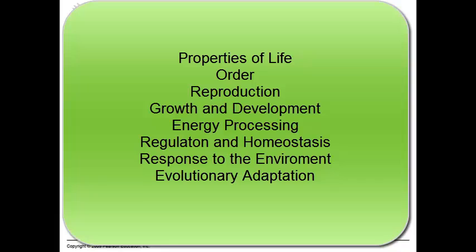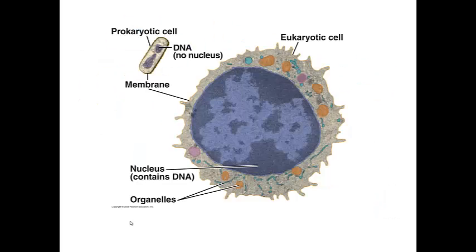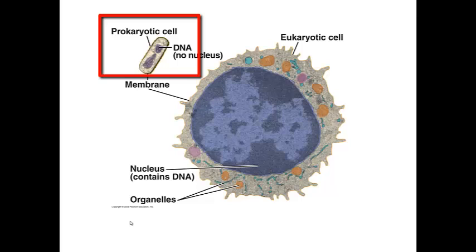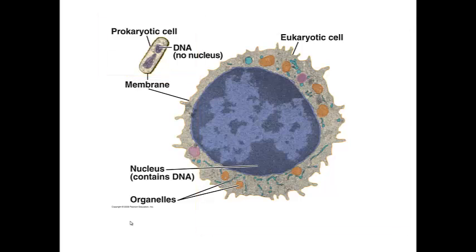And so it's here at this level and following through all of the higher levels of the hierarchy in which we see the properties of life. There are two types of cells, prokaryotic cells and eukaryotic cells. Take a moment to visually compare the two in the picture and list the differences that you see. Okay, let's see how you did.